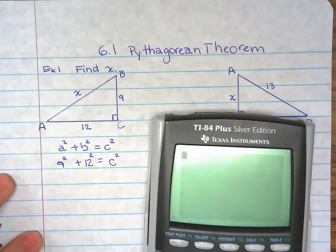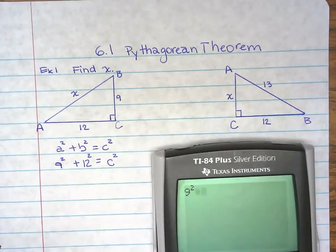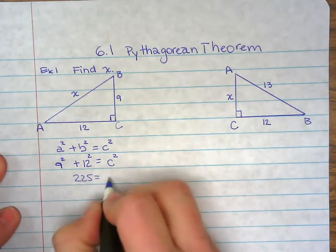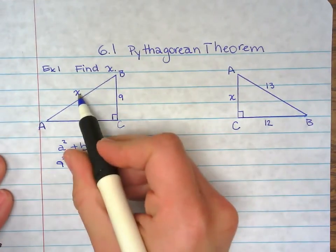So 9² plus 12² is 225. So 225 = c². But we're not looking for c², we're looking for c or x.